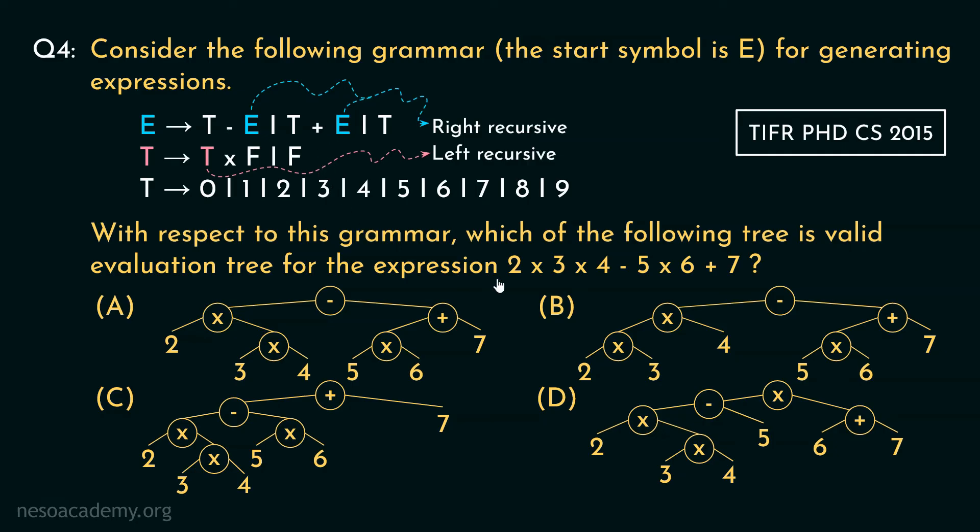So this expression is actually is this. Observe this portion. Since into is left associative, so 2 into 3 into 4 would actually be 2 into 3 into 4. Now into has higher precedence than all. So 5 into 6 will also be performed separately. Now minus and plus have same precedence but their associativity is right to left. So the expression would become this.